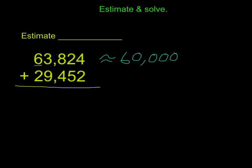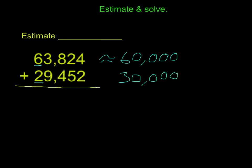Then we look at our next number, 29,452. Once again, I'm going to underline the 10,000ths digit. I have a 2 in the 10,000ths place and I look right next door — I have a 9. Following our poem: if it's 5 or more, we add one more. Because 9 is more than 5, we're going to add 1 to our 2, and that gives us a 3, or 30,000, because everything to the right turns into 0s. So it's about 30,000.